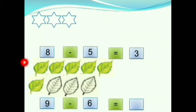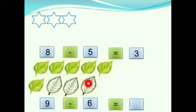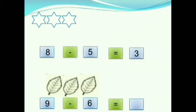Children, here we have leaves. How many leaves are there? Let us count it. 1, 2, 3, 4, 5, 6, 7, 8, 9. There are 9 leaves. 6 leaves are colored and 3 leaves are not colored. Now we will take away the colored leaves. After taking away the colored leaves, how many leaves are remaining? 1, 2, 3. 3 leaves are remaining. So, 9 minus 6 is equals to 3.